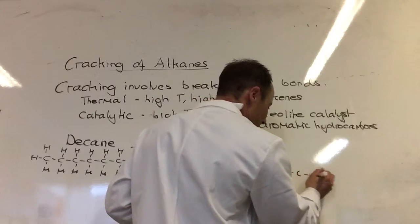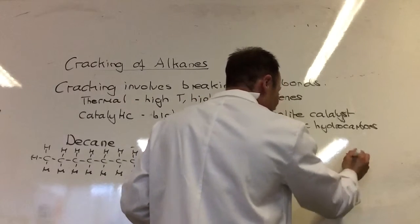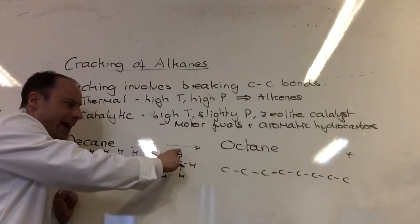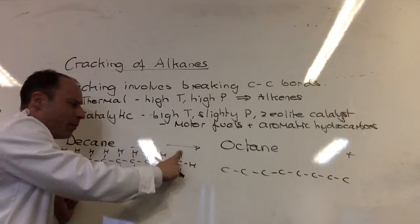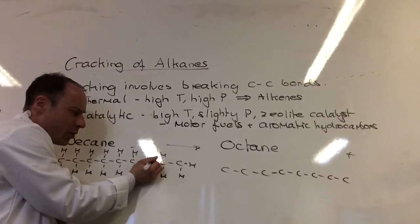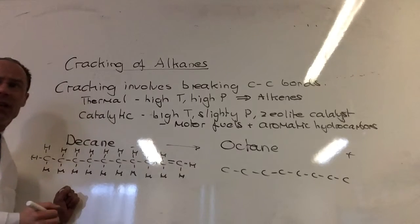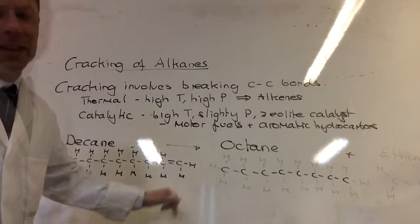I'm going to create octane where I've got eight carbons in a row. One, two, three, four, five, six, seven, eight. And if I just do it on here, that hydrogen can move perhaps to go there, and there I'm going to create my carbon-carbon double bond. So I've made an alkene there.